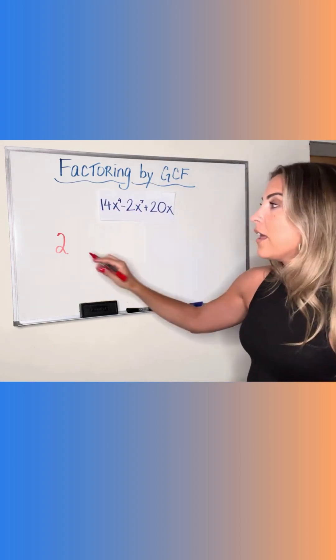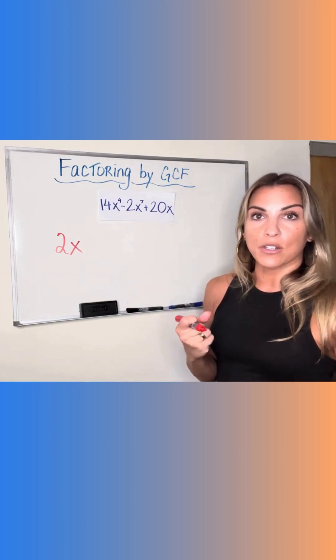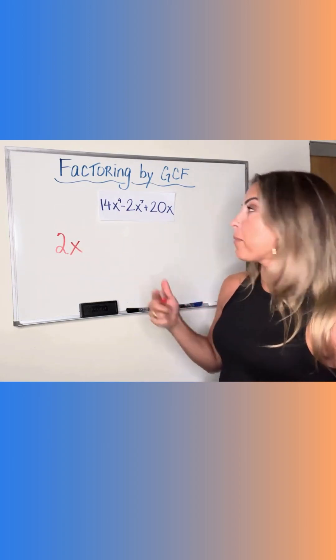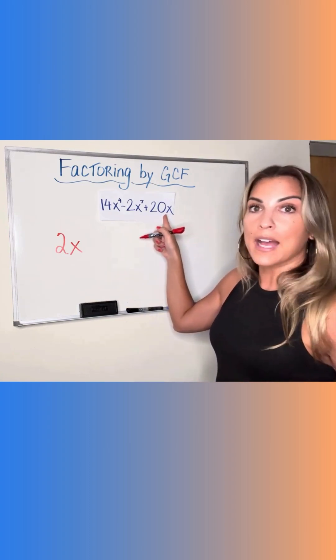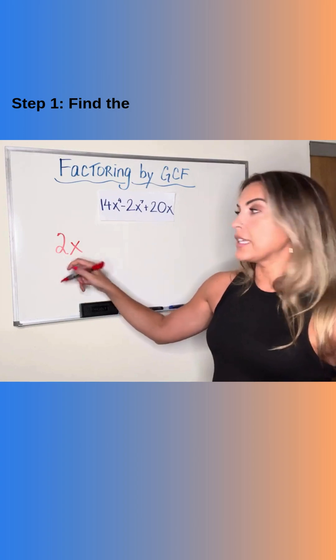So that is the smallest one. That is the maximum amount of x's that I can take out as a factor. I can't take out any more than that because that third term only has one x there. So 2x is my GCF.